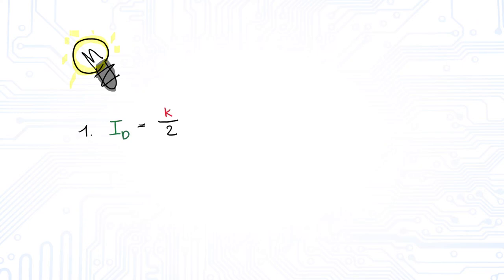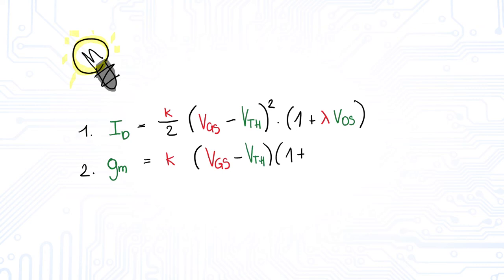The first equation is ID is K half times VGS minus VTH squared times 1 plus lambda VDS. The second equation is GM is K times VGS minus VTH times 1 plus lambda times VDS. Last but not least, the third equation is GDS is the derivative of ID to VDS is K times a half times VGS minus VTH squared times lambda.